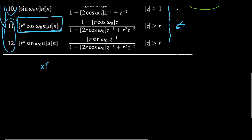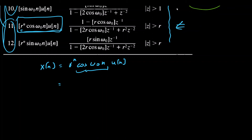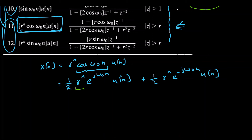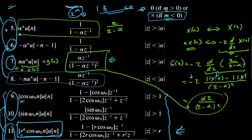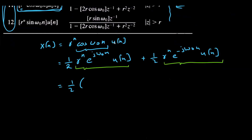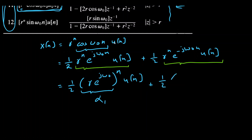For the proof of pair eleven, we have x(n) = r^n · cos(ω₀n) · u(n). Using Euler's identity to expand the cosine into exponentials, this becomes one-half times r^n · e^(jω₀n) · u(n) plus one-half times r^n · e^(-jω₀n) · u(n). Notice that each term is of the form alpha^n · u(n), which is pair five, where alpha₁ = r·e^(jω₀) and alpha₂ = r·e^(-jω₀).